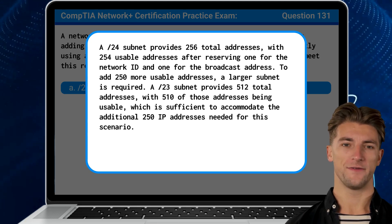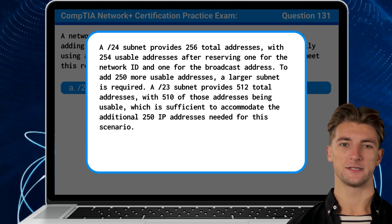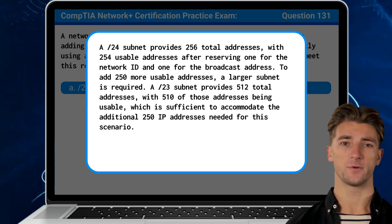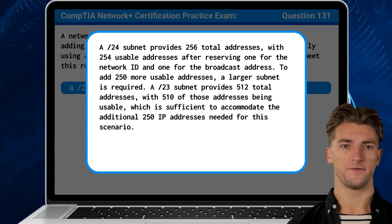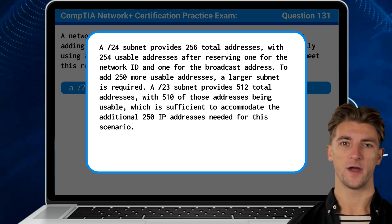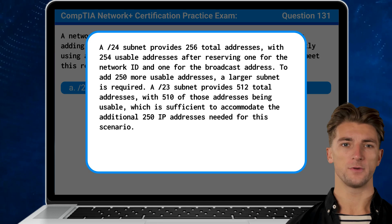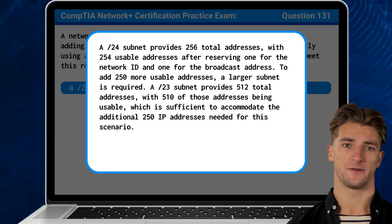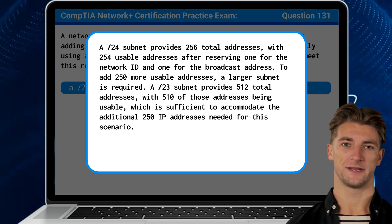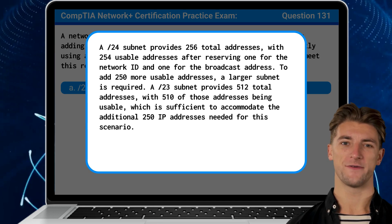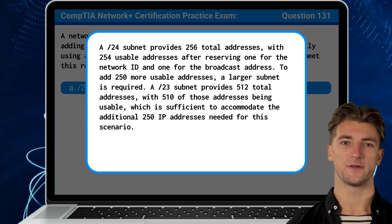The /24 subnet provides 256 total addresses, with 254 usable addresses after reserving one for the network ID and one for the broadcast address. To add 250 more usable addresses, a larger subnet is required. A /23 subnet provides 512 total addresses, with 510 of those being usable, which is sufficient to accommodate the additional 250 IP addresses needed for this scenario.